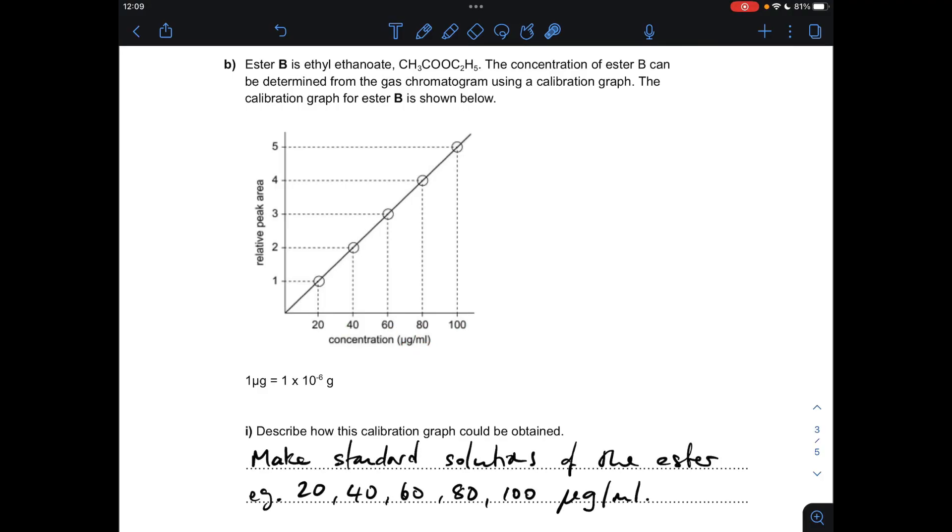Then, once you've got your standard solutions, you'd need to take each one at a time and run it through the GC apparatus. The machine just measures the area for each concentration and then turns it into this relative peak area by basically dividing through by the smallest area. Obviously, the lowest concentration will give you the lowest area, so that's why that's assigned one.